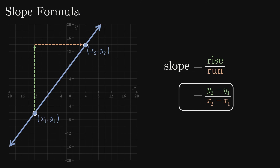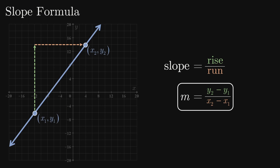We often use the letter m to represent the slope, perhaps relating to the French verb monter, which means to ascend or to climb. Note that in the slope formula, it does not matter which point is x1y1 and which is x2y2. The interaction of positives and negatives will result in the same value, regardless of which point is called point 1 and which is called point 2.